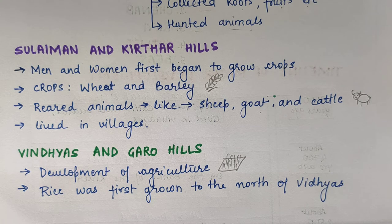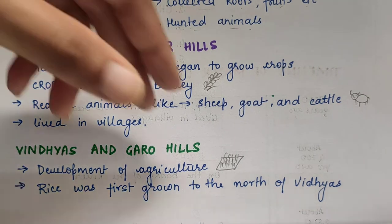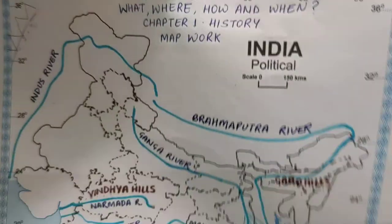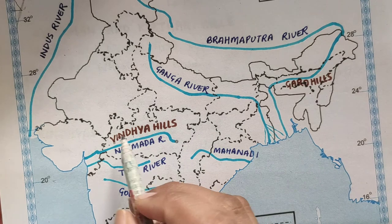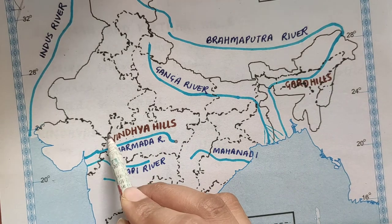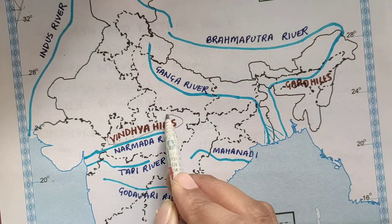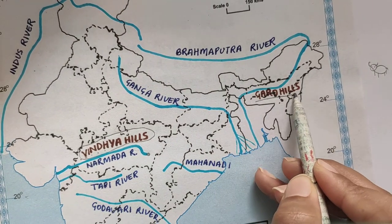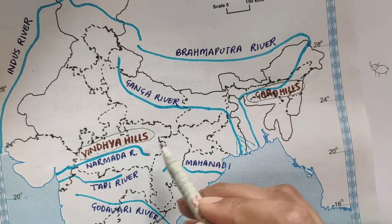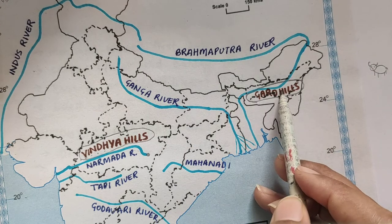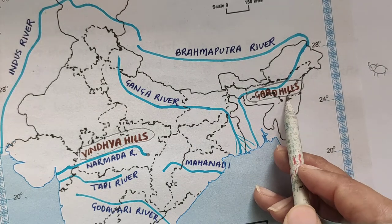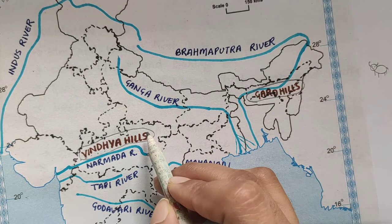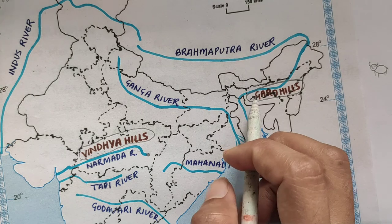Now we will learn about Vindhya and Garo Hills. There are two hills — one is Vindhya and one is Garo. Vindhya is in Madhya Pradesh — can you see here? This is Vindhya Hills. And this is Garo Hills. Vindhya is in Madhya Pradesh and Garo Hills is in Assam. So people started living here also, near these hills.